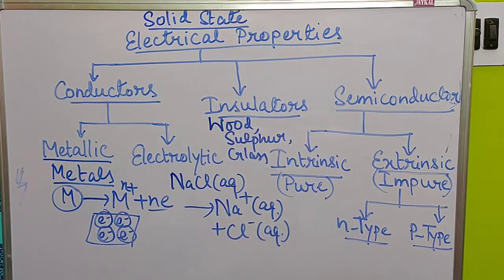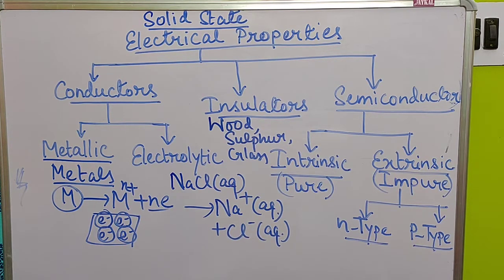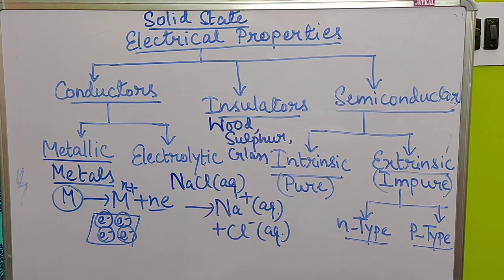The last type is semiconductor. Semi means half, so their conductivity level is in between the conductor and the insulator. They are not a very good conductor of electricity, nor a very bad conductor. Their conductivity value lies in between insulators and conductors, and that is why they are called semiconductors. Examples are silicon and germanium.